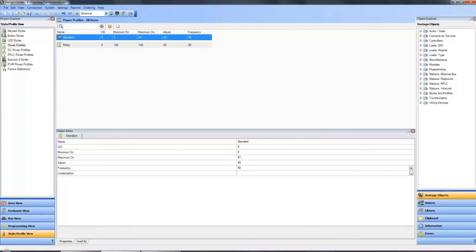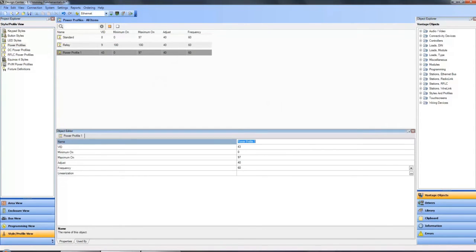Step one, within the style profile view, we create a new power profile. There are three types of power profiles. Default for forward or reverse phase dimmer loads, known simply as power profile. DC profile for 0 to 10 dimmer loads. And PWM power profiles for PWM dimmer loads. Once we select the correct profile type, we double click to create a new profile and rename it so as to represent the applicable fixture.